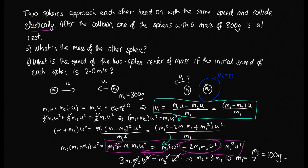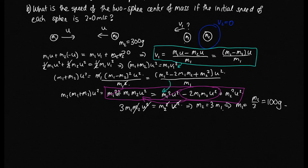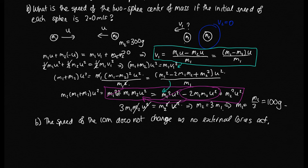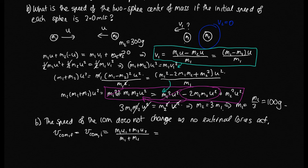Now for Part B: what is the speed of the two-sphere center of mass if the initial speed of each sphere is 2 m/s? We use the fact that the speed of the center of mass does not change since no external forces act. So V_cm (final) = V_cm (initial). We calculate: V_cm = (M1U1 + M2U2) / (M1 + M2). Since M1 = 100 g and M2 = 300 g, and grams appear top and bottom, no unit conversion is needed.